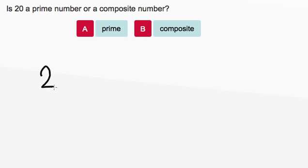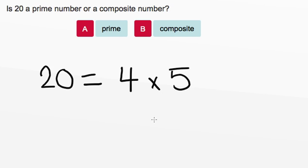So can we think of factors of 20 other than one and 20? Well, how about 4 and 5? We know 4 times 5 equals 20. So that means 4 and 5 are factors of 20, and that means 20 has factors other than one and 20. So this means 20 is composite.